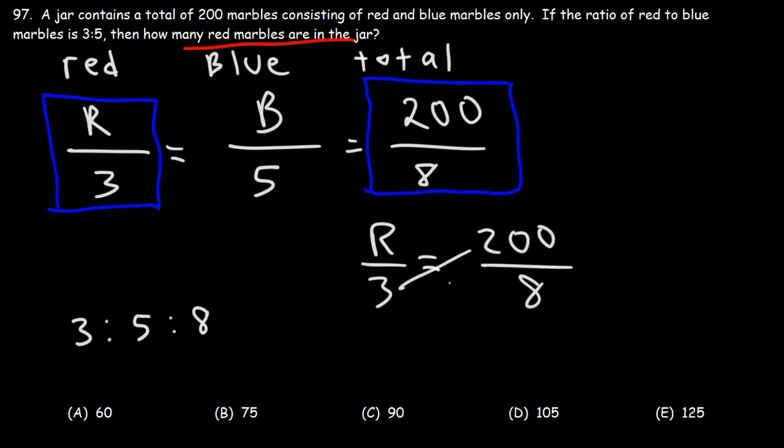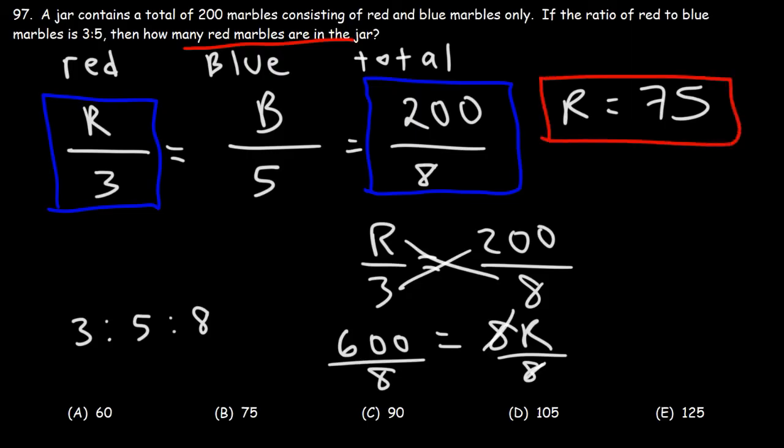Now, let's cross multiply. 3 times 200 is 600, and this is going to equal 8R. Now, all we need to do is divide both sides by 8. 600 divided by 8 is 75. So this means that there's 75 red marbles in the jar. So answer choice B is the correct answer.